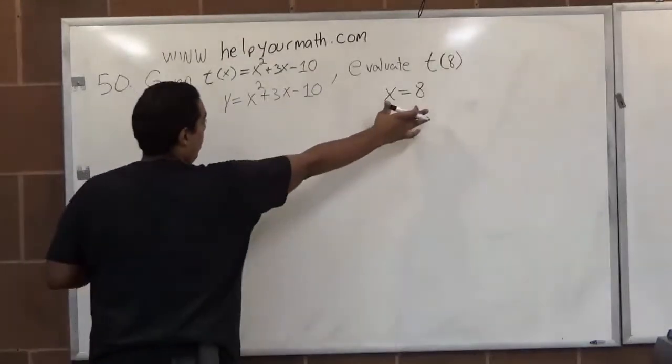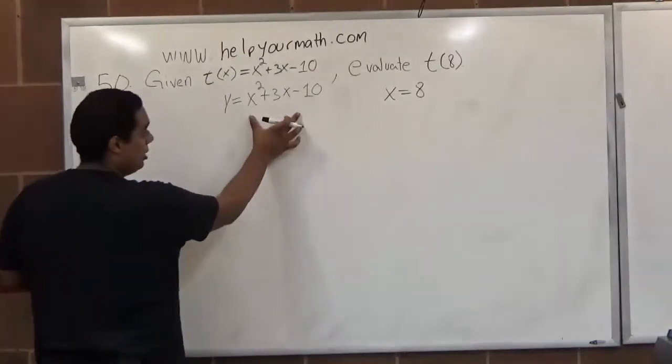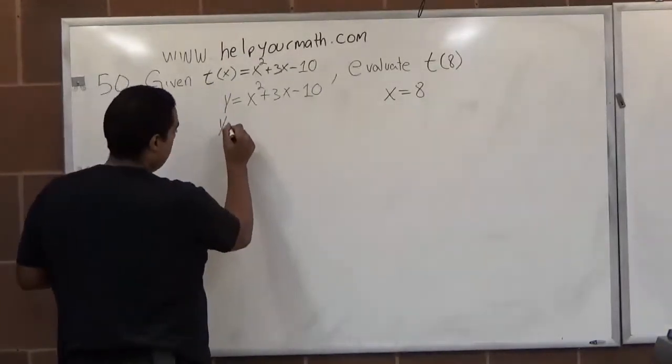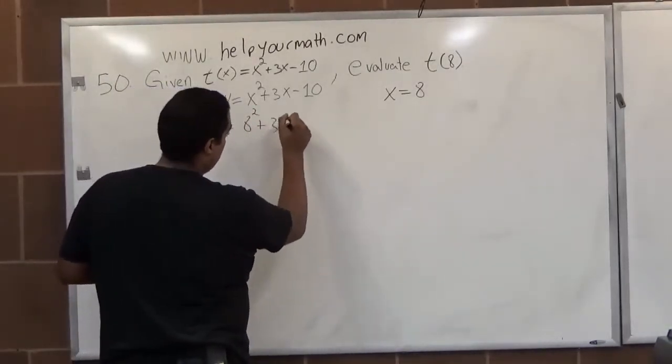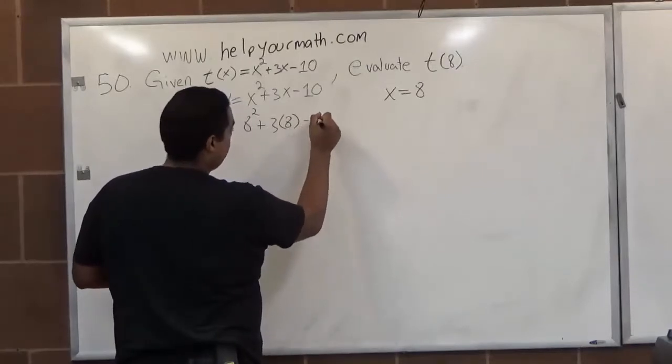Now we just need to plug in our x into this equation. So y equals 8 squared plus 3 times 8 minus 10.